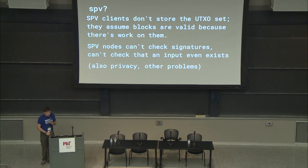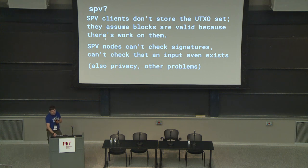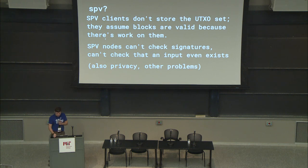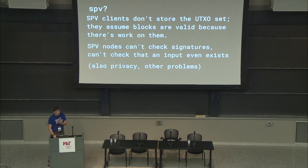And there's the idea of SPV, mentioned in the original Bitcoin paper. An SPV client, in contrast to a full node, doesn't have the UTXO set — it doesn't have the current state of the system. They assume that a block is valid only from the proof of work. They check the block but don't check the transactions. SPV nodes can't check signatures because they don't know what the public key even is. They can't check that an input even exists.